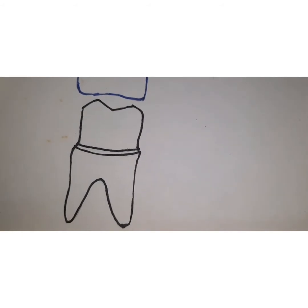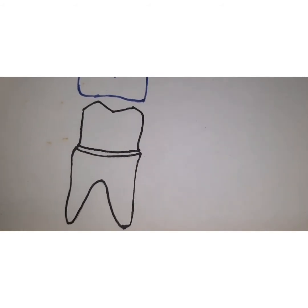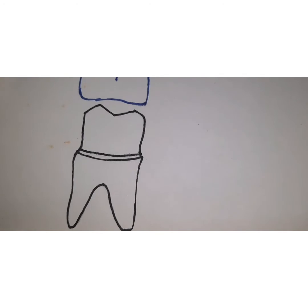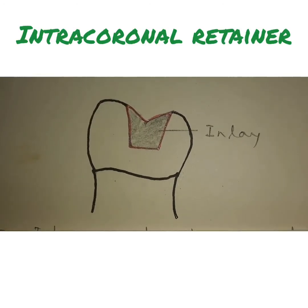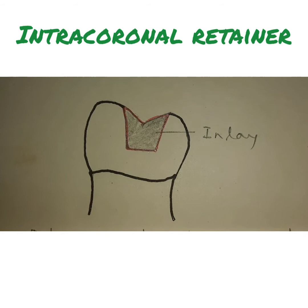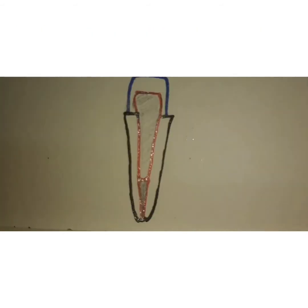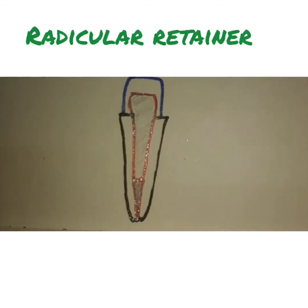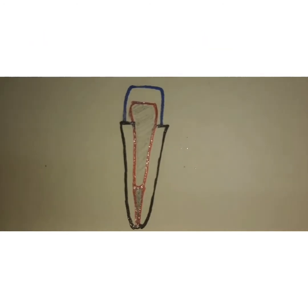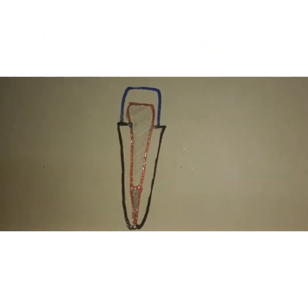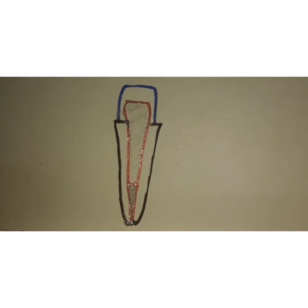Apart from extracoronal retainers, you have intracoronal retainers like inlays or onlays, which take support from within the contours of the tooth. The third type is radicular retainers, which take support from the root portion. So these are the three types of retainers classified on the basis of location.